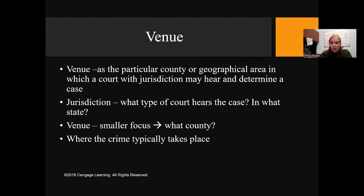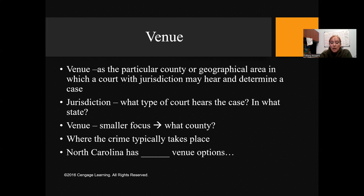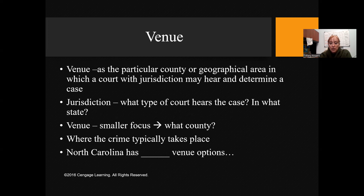When we talk about jurisdiction it's the type of court — civil, criminal, federal, state — and then in what state. When we look at venue we're very focused on the county level. I have written '41' here — that is incorrect. North Carolina has 100 counties, so we have 100 venue options. That is not the right number on the slide. As long as you're watching the videos, you'll get that on the test because that is a question.